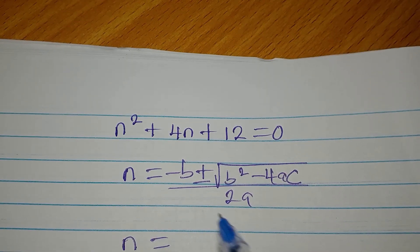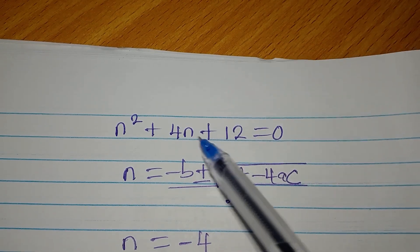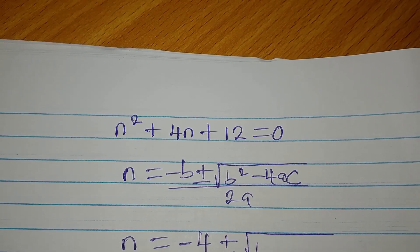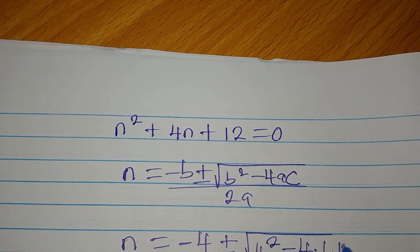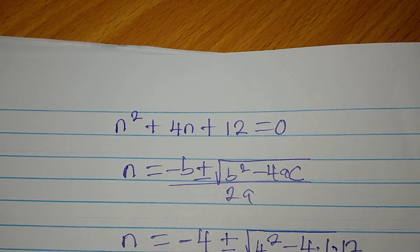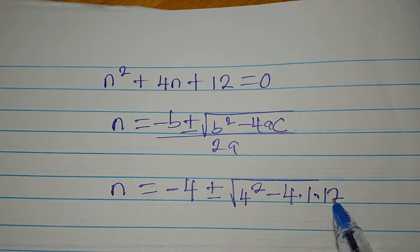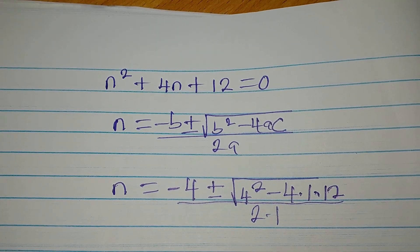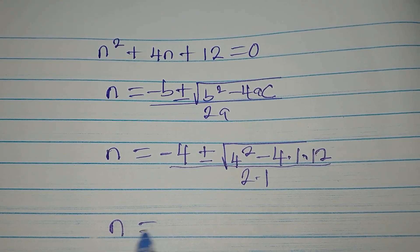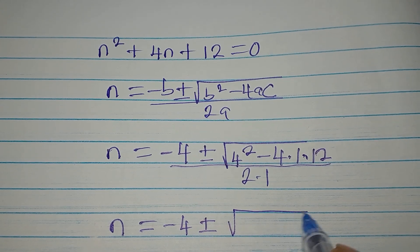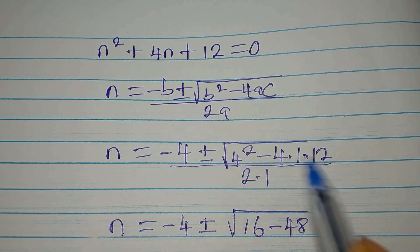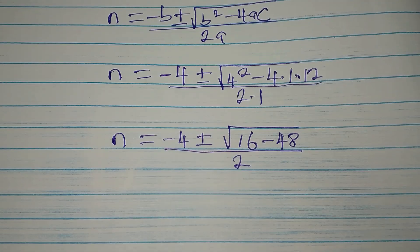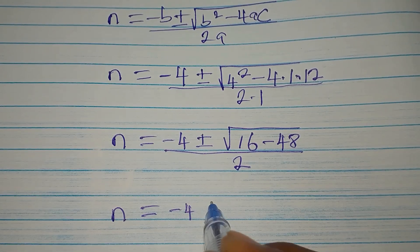Our n will now be: minus b which is minus 4 since b is 4, plus or minus square root of b squared which is 4 squared, minus 4 times a times c which is 4 times 1 times 12, since a is 1 and c is 12, all divided by 2 times 1. So n equals minus 4 plus or minus square root of 16 minus 48, over 2.